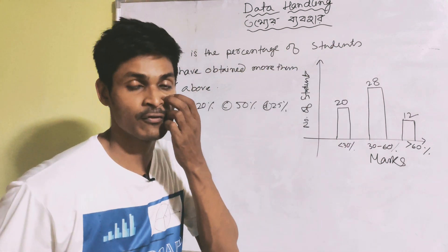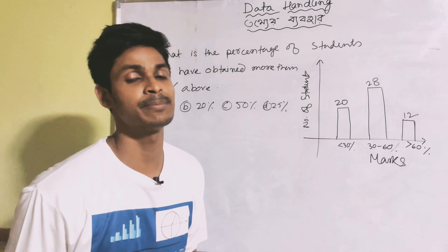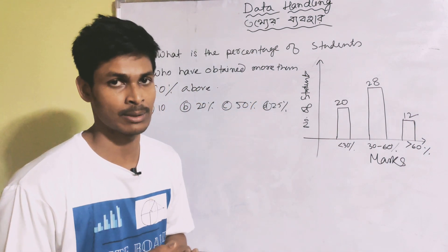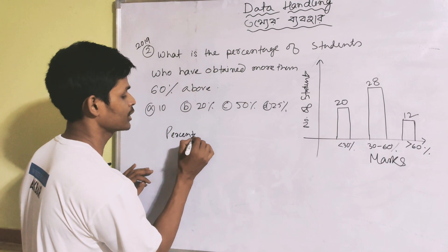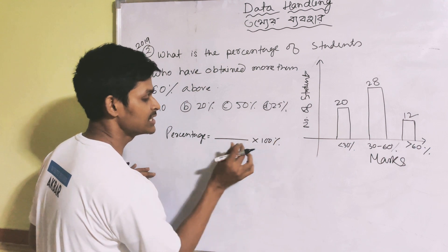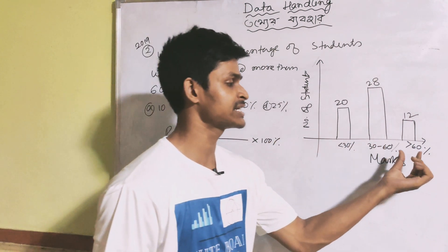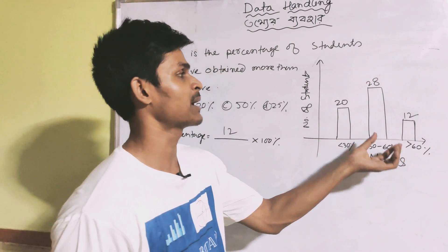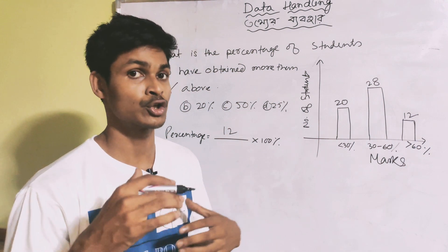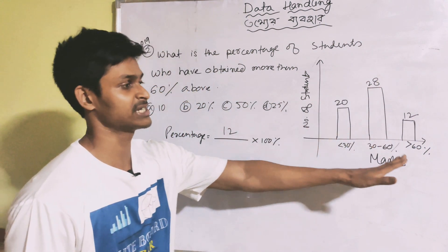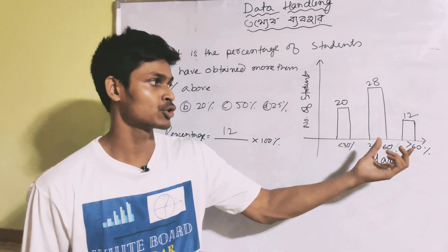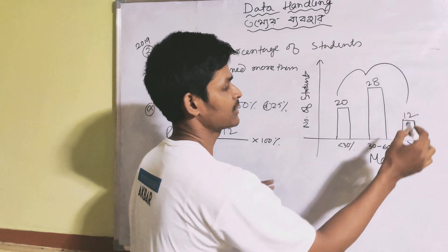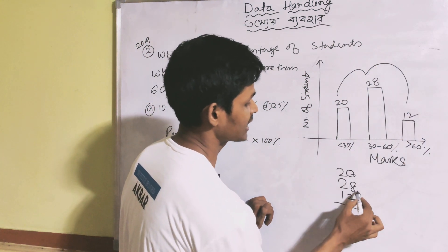The question is: what is the percentage of students who have obtained more than 60% marks? The percentage formula is: number above 60% divided by total, into 100. Total students = 20 plus 28 plus 12. Calculating: 8 plus 2 is 10, carry 1 — gives 60 total students.